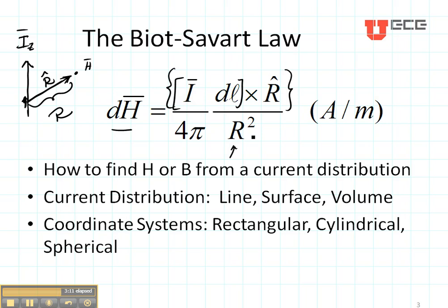So in this lecture, we're going to learn how to use the Biot-Savart Law to find H or B from a current distribution. Those are vectors. The current distributions could be line, surface, or volume in three different coordinate systems.